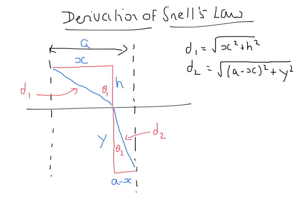We've set up a scenario in the diagram. We've got an incident ray approaching a boundary at theta 1 to the normal. I've broken it down into two sides to make a right-angle triangle, and then it's coming out of the boundary at angle theta 2 to the normal, and again I've built a right-angled triangle here. I've labelled various dimensions: the total distance across is A, one side of this triangle is X and its height H, then we've got the height of the second one which is Y, and A minus X being this side here.